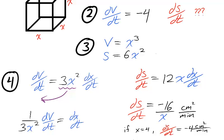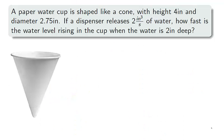For example, if the side length is equal to 4 centimeters, then the change in surface area is negative 4 centimeters squared per minute.